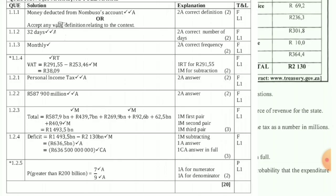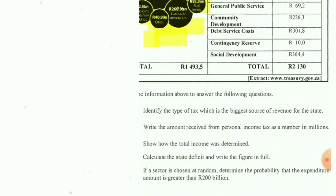To explain probability simply: imagine there are blue balls and yellow balls — 7 blue and 3 yellow, totalling 10. The probability of picking a blue ball is 7 over 10, and yellow is 3 over 10. That's the same principle here — count the favourable outcomes over the total. Comment below if you don't understand and I'll explain further.